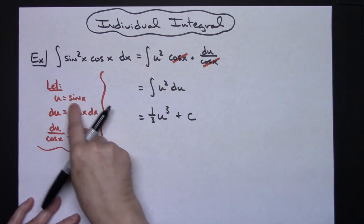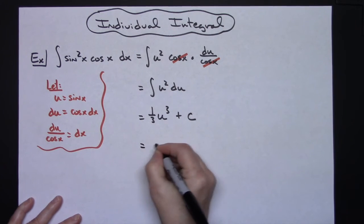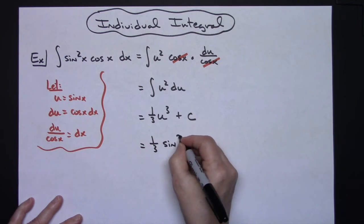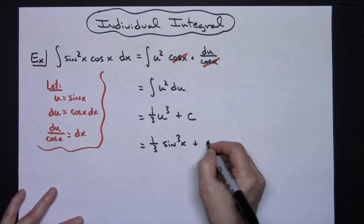As a final step, replacing u with what we said it was going to be, I'll have one third sine x to the third power plus c.